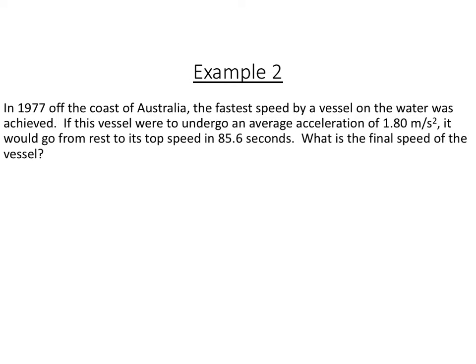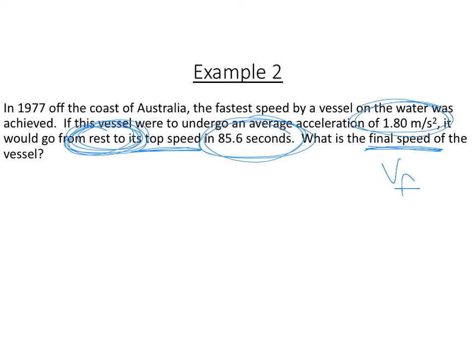Now we have, looking at off the coast of Australia, the fastest speed of a vessel was able to undergo an average acceleration of 1.8 meters per second squared. It would go from rest, so you need to watch for words like this, from rest, or coming to a stop, to whatever its top speed is in 85.6 seconds. It wants to know what the final speed is. So that will be V final. 1.8 meters per second squared tells us it's acceleration from rest. So that means it started with absolutely no speed. So that means V initial is 0. And then our time is 85.6.